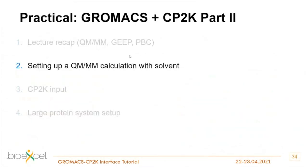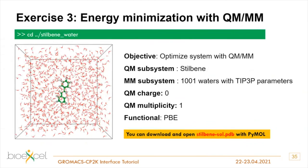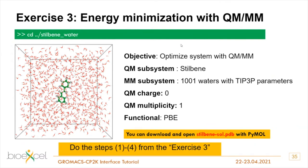Let's do the real QM/MM system. The first system will be the stilbene molecule in a box of TIP3P water. Please do steps one to four of exercise three. Regarding cell dimensions: the full MM cell is directly inherited from the GROMACS box, and QM cell dimensions are calculated automatically at the gmx_pp level. You don't need to worry about this - it will create a large enough QM cell that your QM system will be inside it.